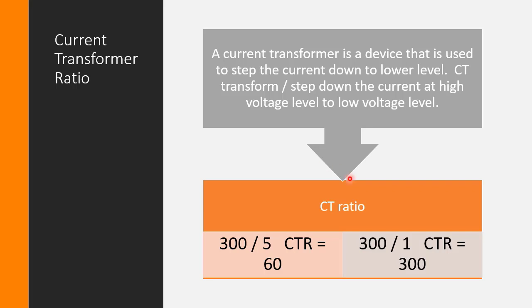Current transformers normally worldwide are available and used with two different secondary rated currents. There are two versions. One secondary rated current is 5A and the other one is 1A. Primary side current is the same but secondary side current is different. When we divide it, you will get 60 for the first and 300 for the second. When we talk about CT ratio, we can say the CT ratio is 60 and 300.